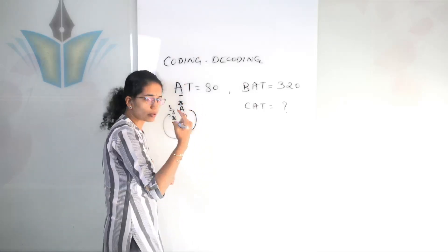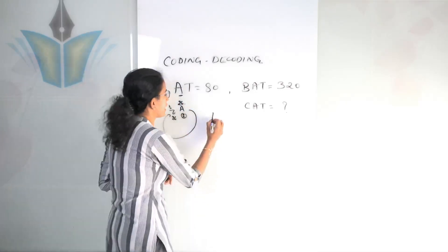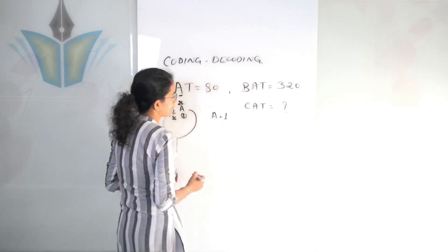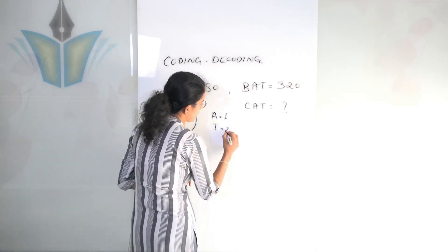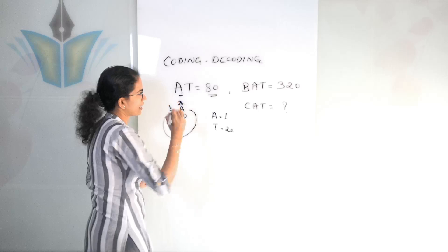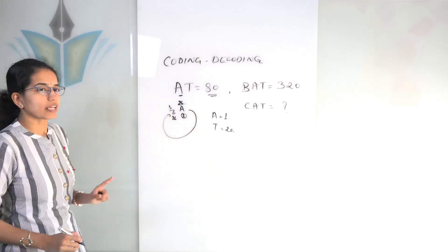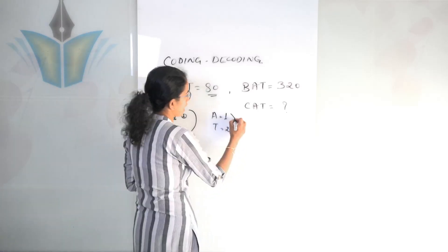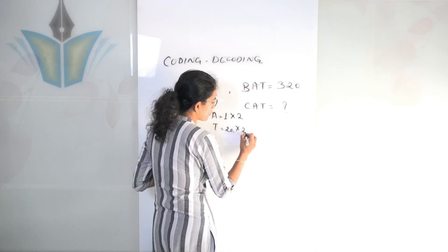Now, if we talk about the alphabetical order, A is the first alphabet and T is the 20th alphabet. How can we reach to AT here? So one good way of reaching here to AT is, I multiply both of them by 2.